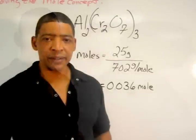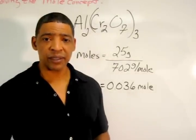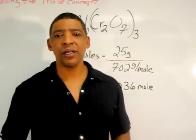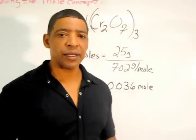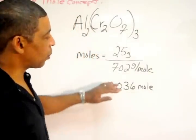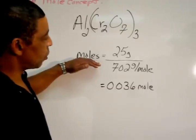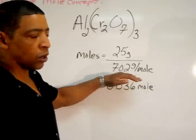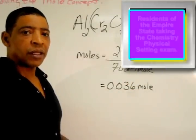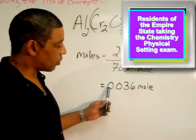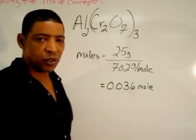If you live in the New York area and must take the New York State Chemistry Regents Exam, you may be asked to report your answer as a final numerical setup. If you are asked to do so, simply write the moles are equal to 25 grams over 702 grams per mole as your answer. If you are asked to report a calculated result, then you write the 0.036 mole.